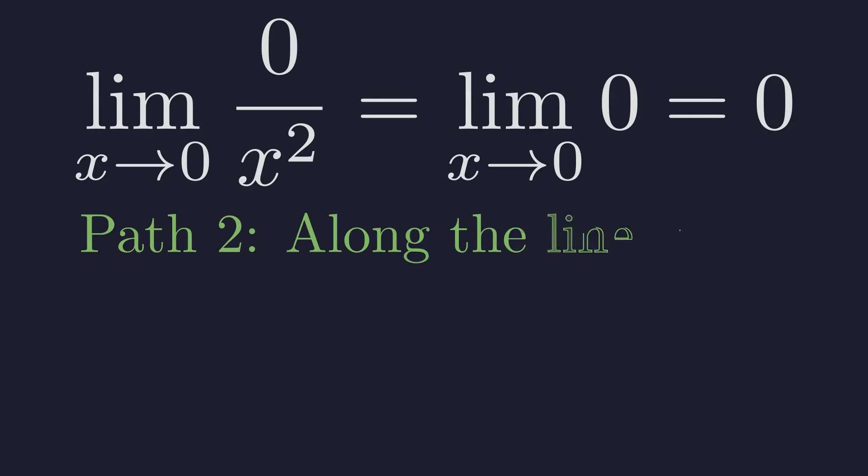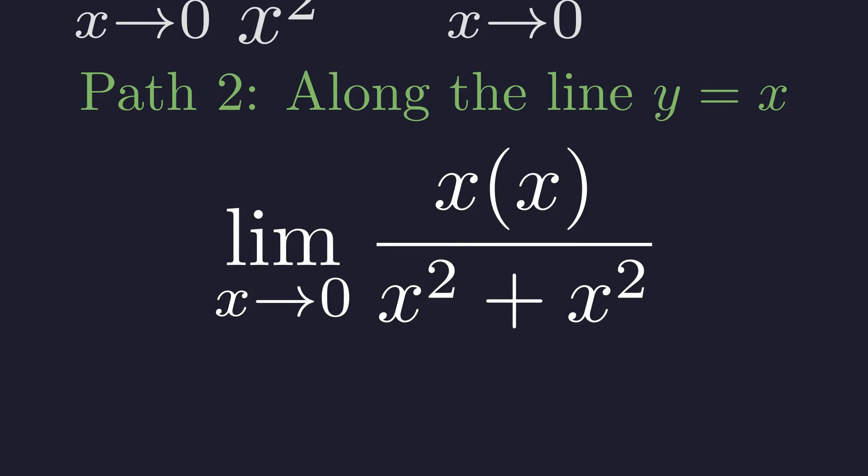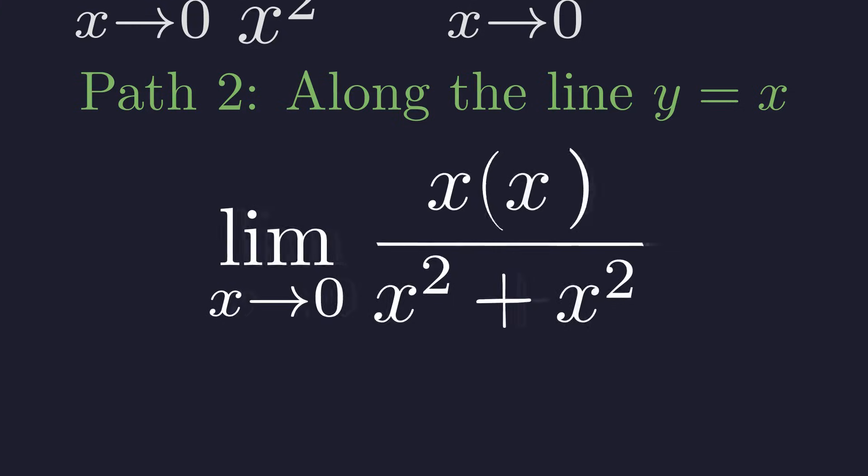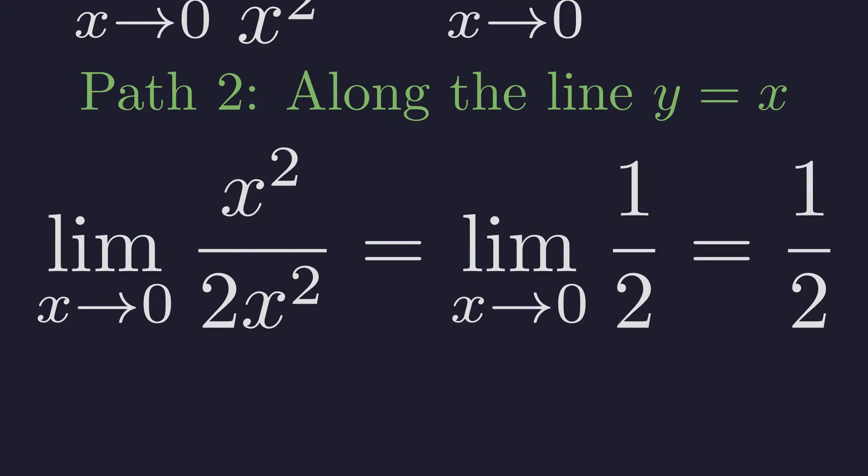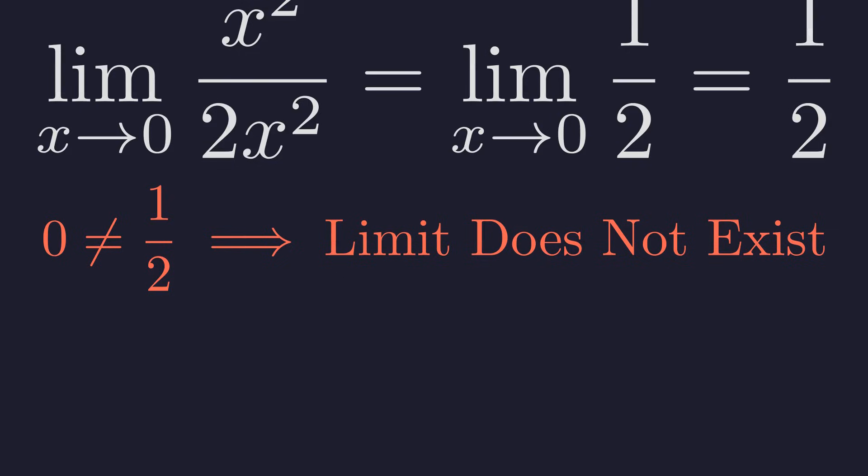Now let's try a different path: approaching along the line y equals x. We substitute x for y in the expression. This simplifies to the limit of one half, which is one half. Since we got different results from different paths, the overall limit does not exist. The order matters.